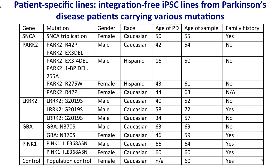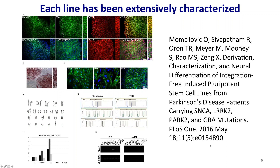The panel of lines we want to make includes patient-specific lines. Here I will only give examples of lines made from Parkinson's disease patients — specifically from familial Parkinson's disease patients carrying mutations in genes associated with the disease. I want you to pay attention to the gene Parkin, also called PARK2, which is one of the patient-specific lines I will illustrate for disease modeling. All lines are integration-free and well-characterized, and we published a paper last year. You can find it on PubMed or email me for a copy.